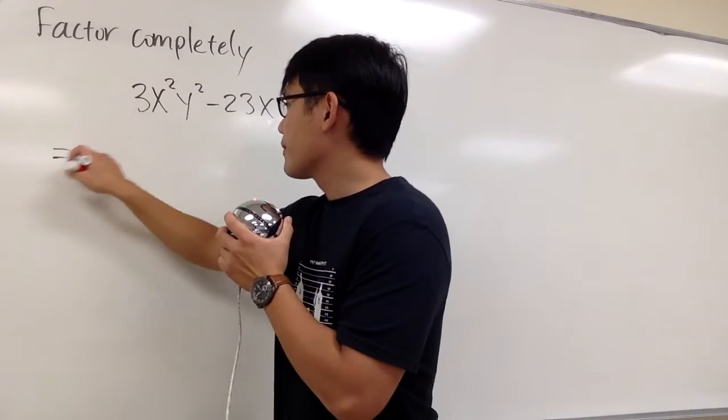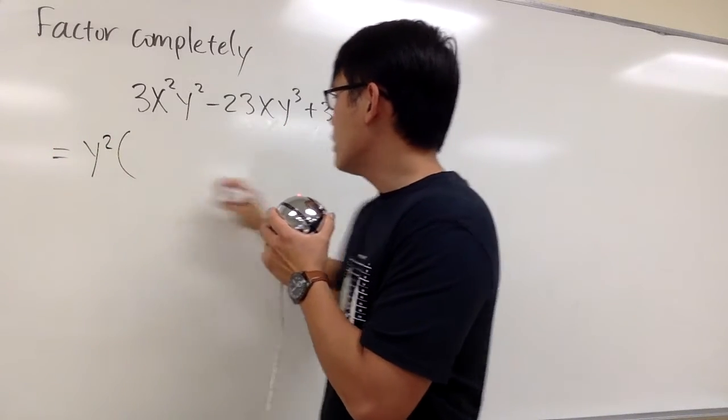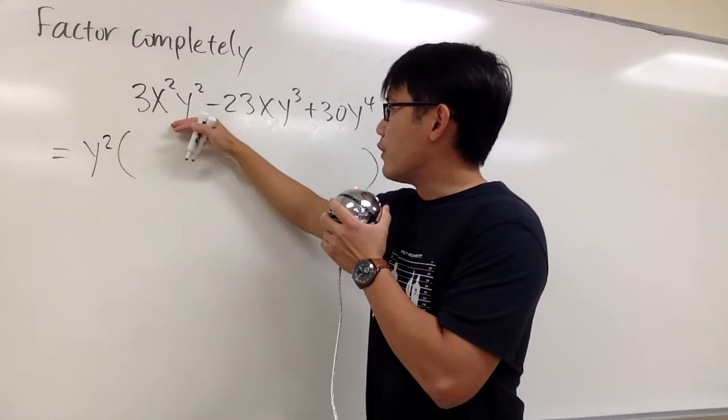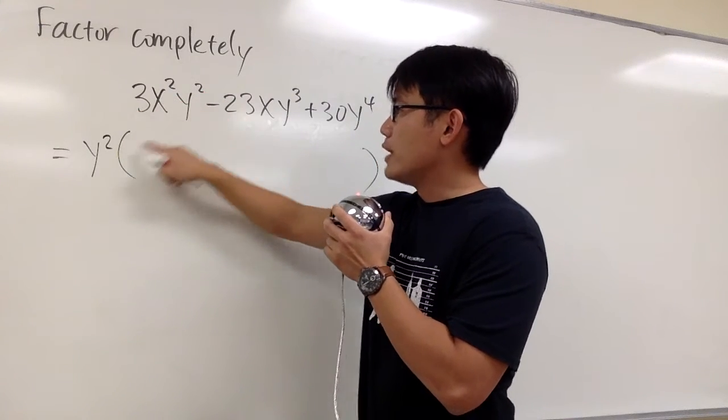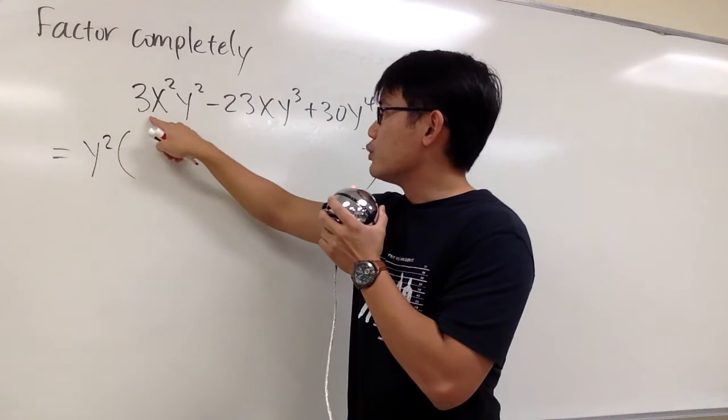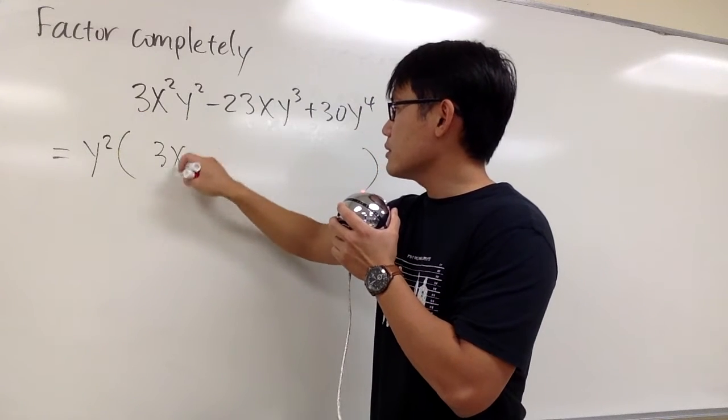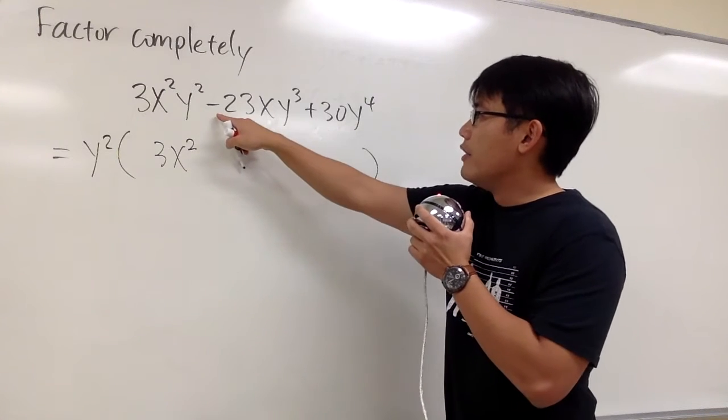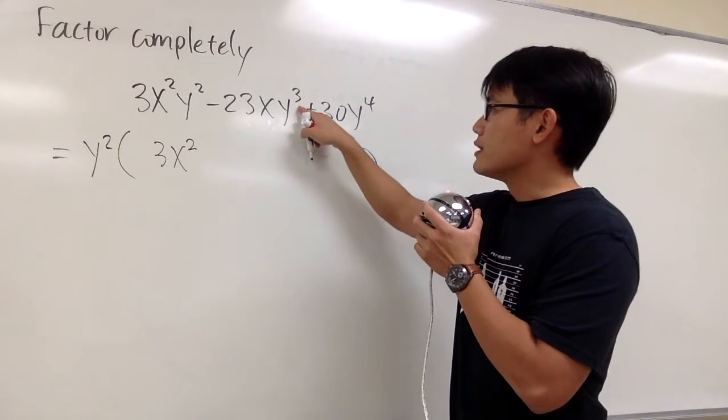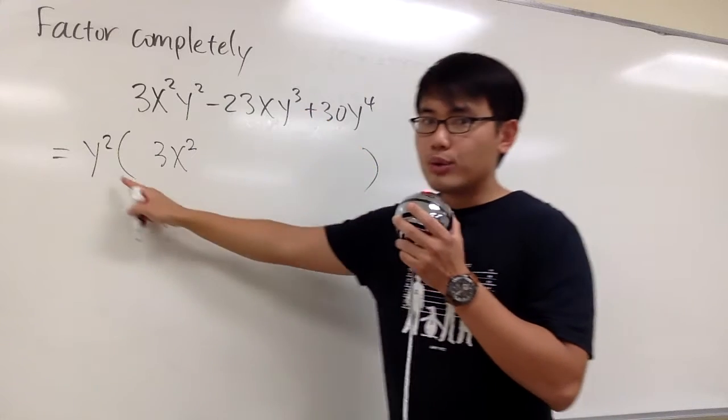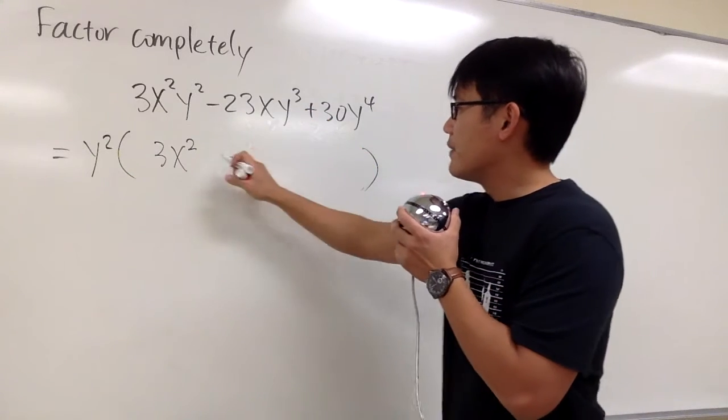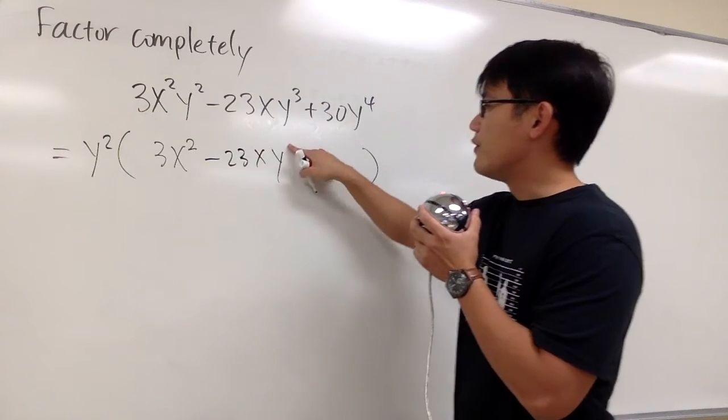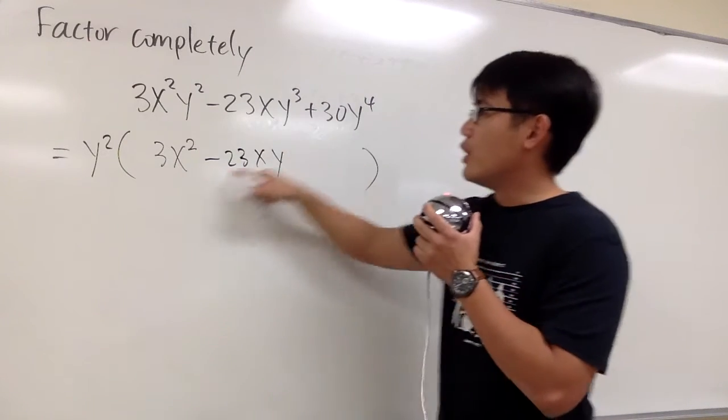And that's our first step. So I'll take out the y², and then for the remaining part, originally for the first term, we have 3x²y², but this y² is out, so we just have 3x². And then, originally for the second term, we have negative 23xy to the 3rd power, but then we took out 2 of the y's, right? So we have minus 23xy to the 1st power only, because we took out 2 of them already.